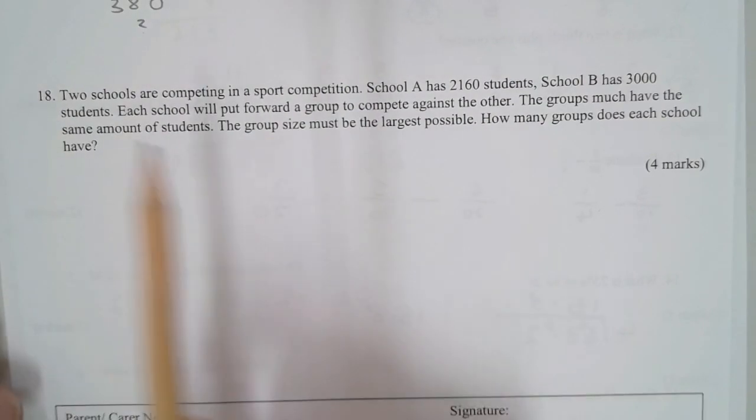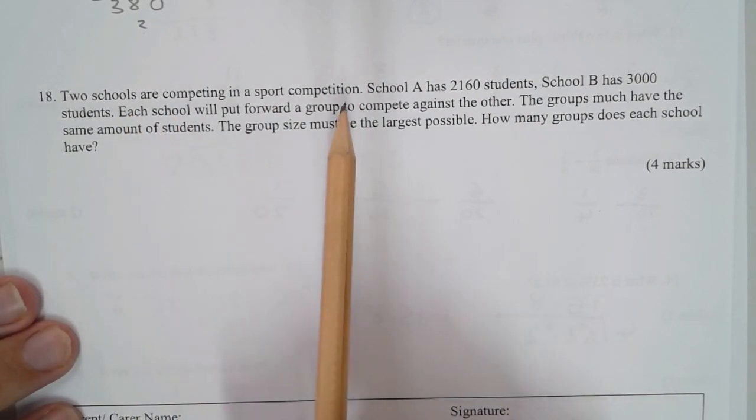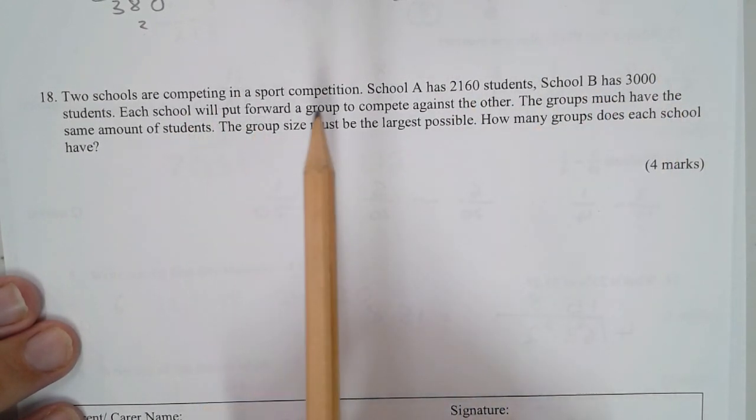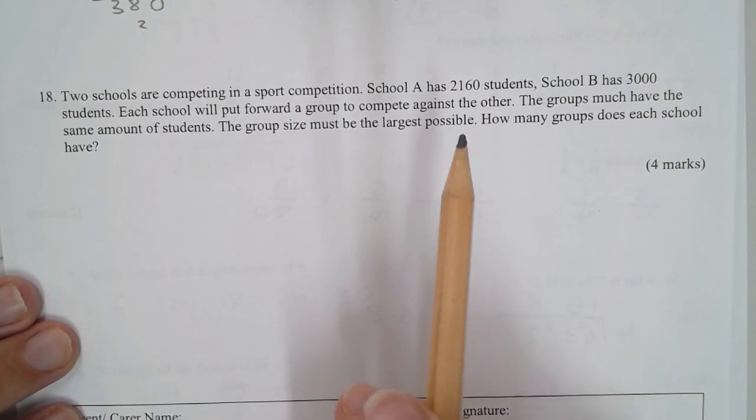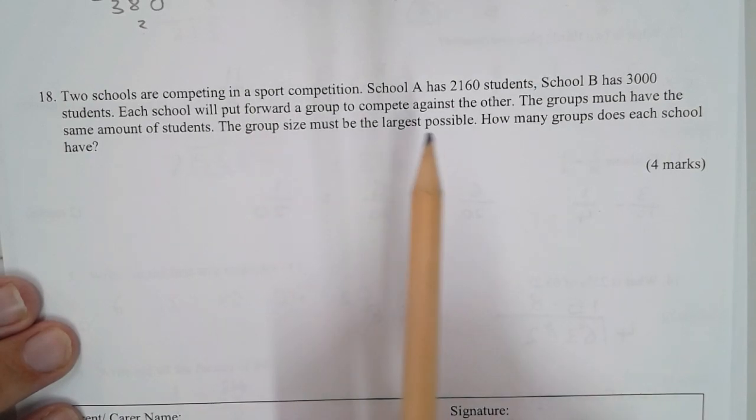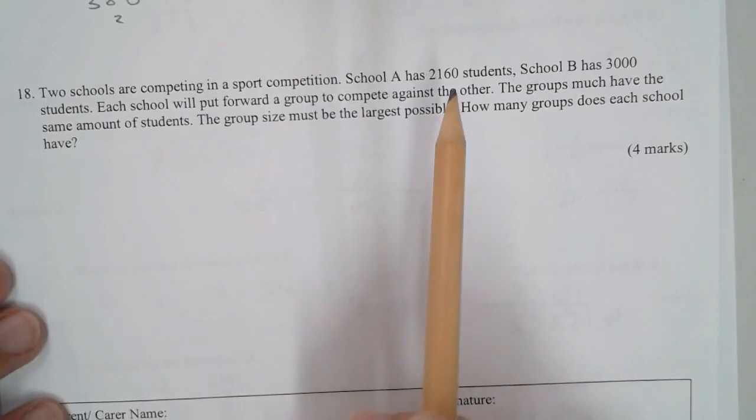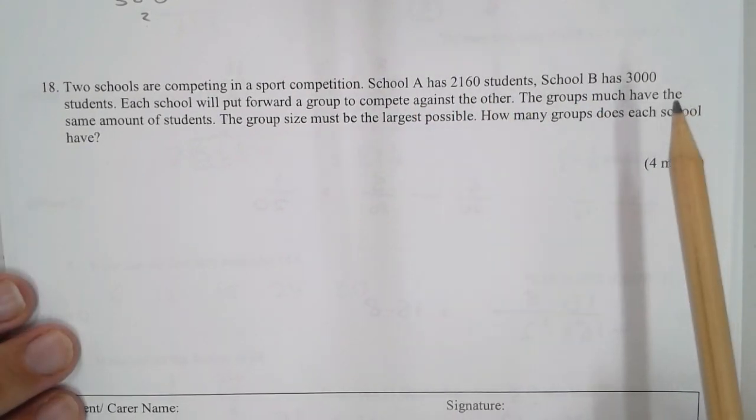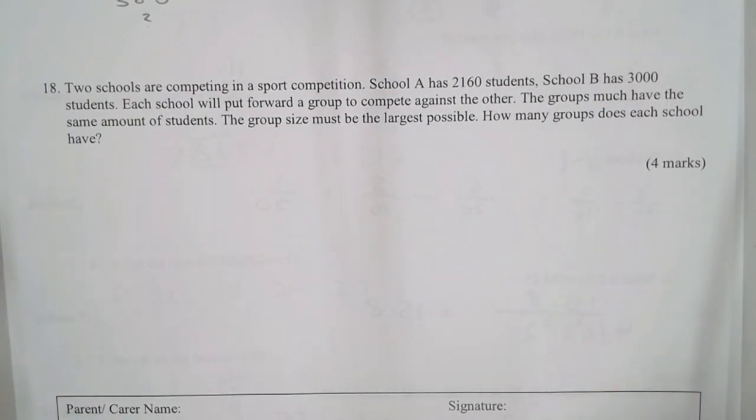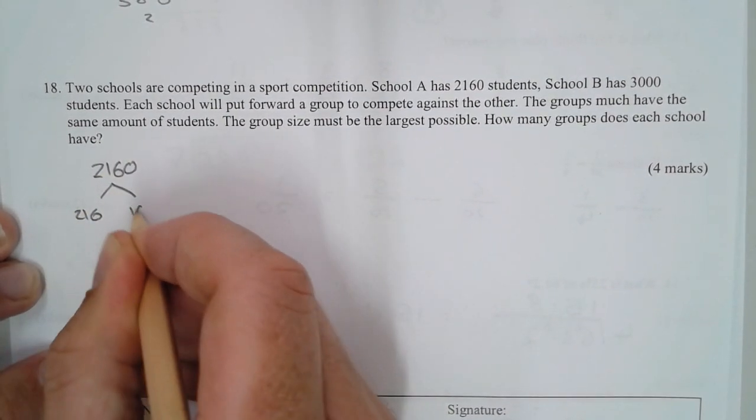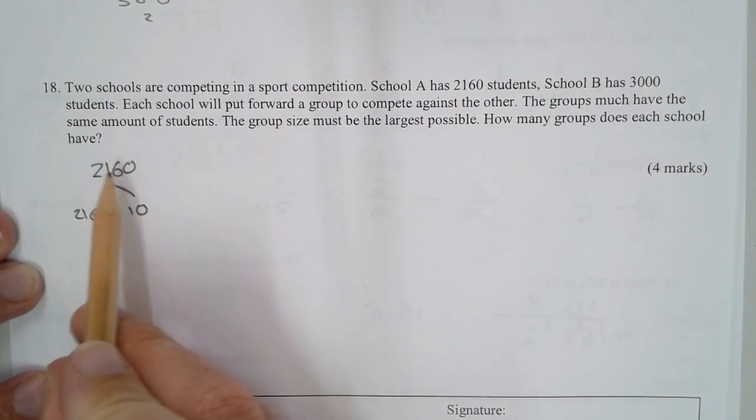Number 18: Two schools are competing. School A has 2,160 students, School B has 3,000 students. Each school puts forward a group to compete. The groups must have the same amount of students, and the group size must be the largest possible. Really, this is asking for the highest common factor.